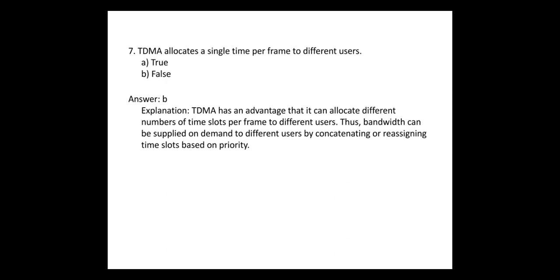Question 7: TDMA allocates a single time slot per frame to different users — this is false. TDMA does not allocate a single time slot; it allocates different time slots to different users. The advantage is that it can allocate different numbers of time slots per frame to different users, and thus bandwidth can be supplied on demand by reassigning time slots based on priority.